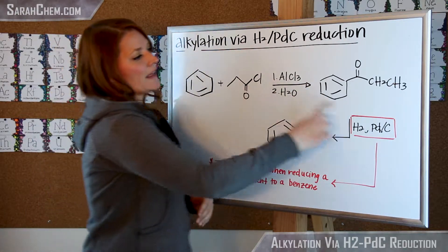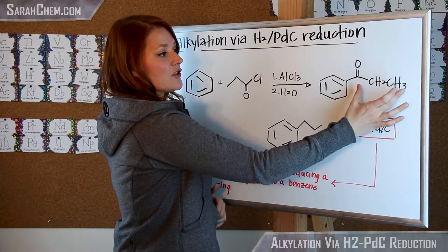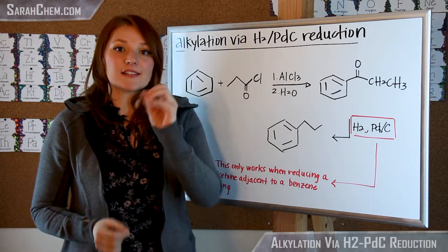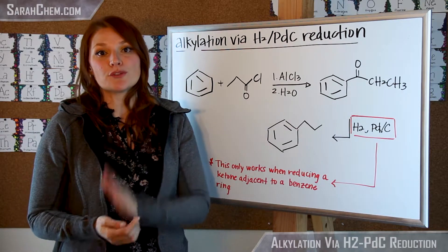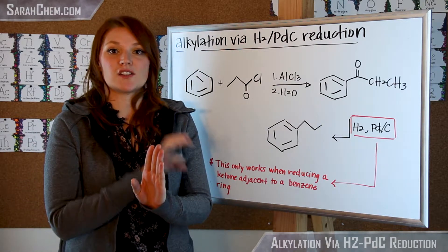So once these react we now get this group over here where this ketone is directly adjacent to the benzene, and that's going to be key because in order for the next step to happen you can only reduce a ketone that is directly adjacent to a benzene ring.